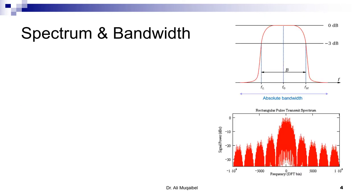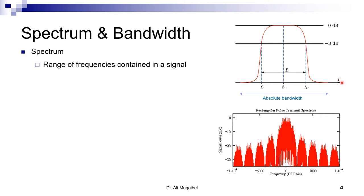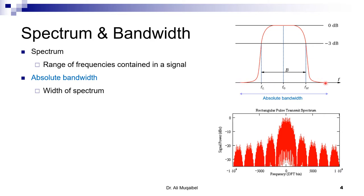What is the spectrum and what is the bandwidth? When we look at things in the frequency domain, we define the spectrum as the range of frequencies that contain the signal — the x-axis is frequency. The absolute bandwidth is the width of this spectrum: wherever you have a non-zero value from start to end, that width is called the bandwidth.